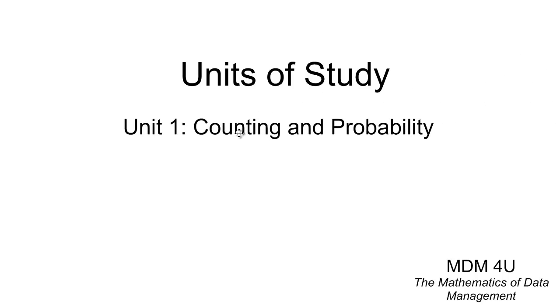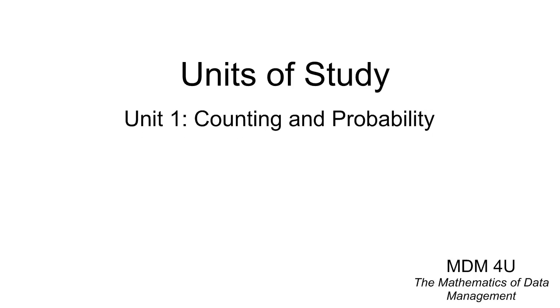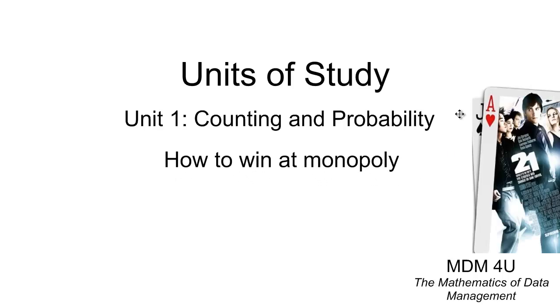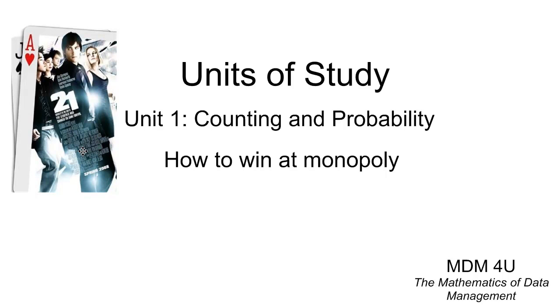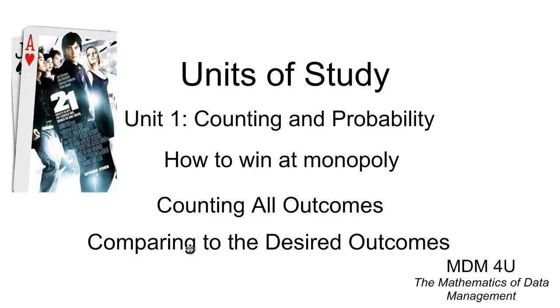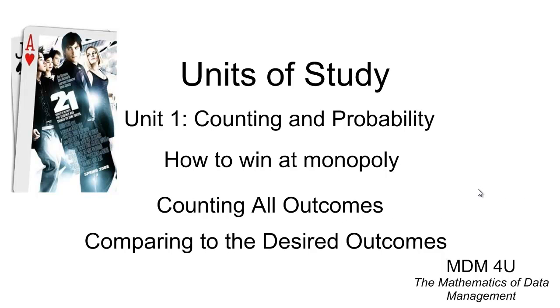In the very first unit we do counting and probability. Now counting sounds maybe a little simple, but I think about it as how to win at Monopoly or Blackjack. If you've watched the movie 21, which is based on a true story, they're doing counting and probability exercises. Essentially you count up all possible outcomes and compare them to the desired outcomes.